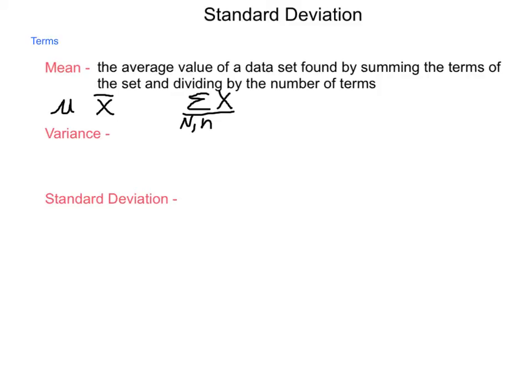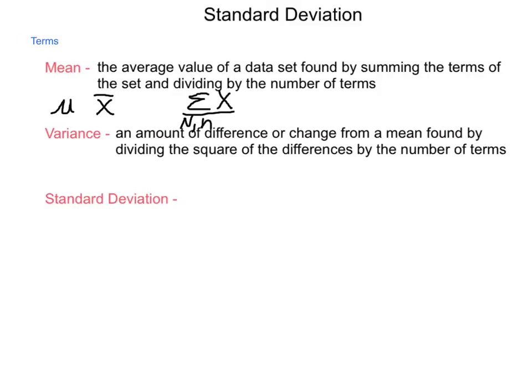Our next term we're going to look at is variance. And variance is an amount of difference or change from a mean found by dividing the square of the differences by the number of terms. And we'll talk more about what that calculation looks like here in a minute.